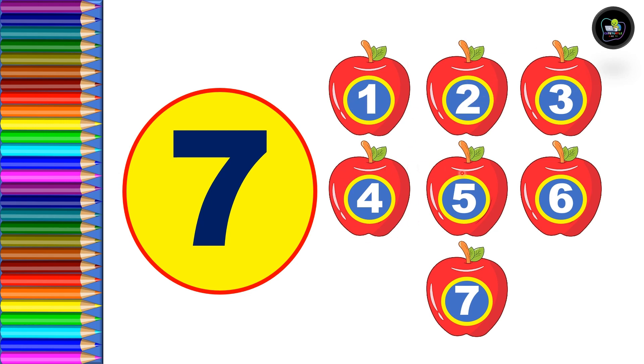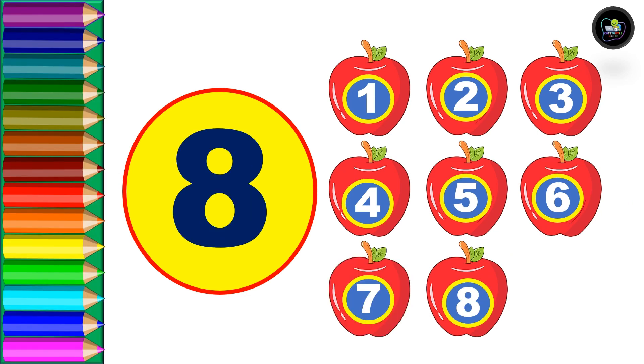Next, seven. Let's count. In first row: one, two, three apples. In second row: four, five, six apples, and last one is seven, total seven apples.